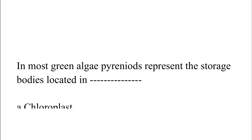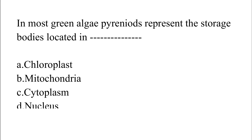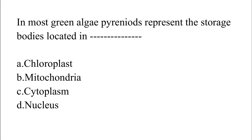In most green algae, pyrenoid represents the storage body located in Option A: Chloroplast. Option B: Mitochondria. Option C: Cytoplasm. Option D: Nucleus. The correct answer is Option A, which is Chloroplast.